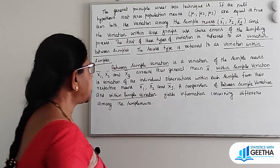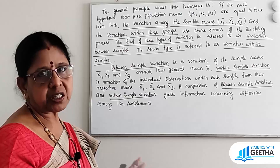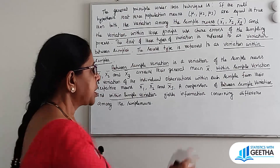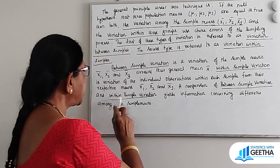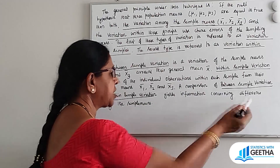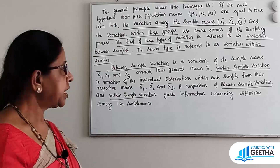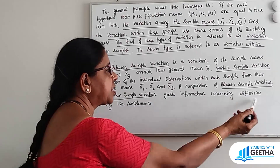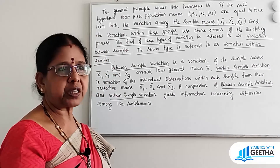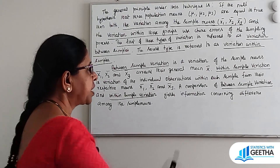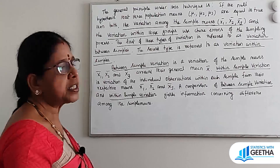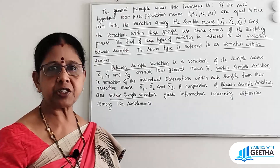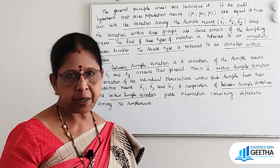A comparison between Sample Variation and Within Sample Variation gives information concerning the difference among the sample means. So if we compare these two variations, we get information regarding the difference among the sample means. This is the general principle by which we apply the ANOVA technique to experiments.